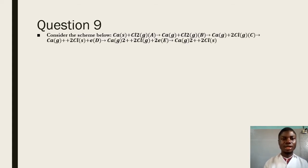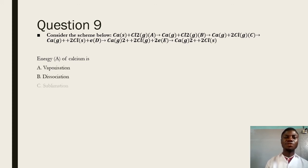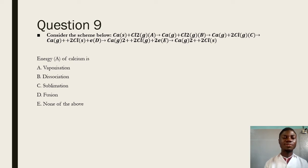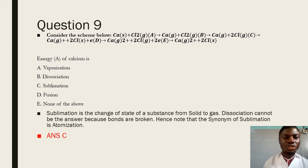Question 9 says: consider the scheme below. We have been given a series of equations and asked to identify energy A of calcium. From calcium solid to calcium gas involves a change of state from solid to gas, so the energy in this case is sublimation. Sometimes you will see atomization used instead — atomization is the same thing as sublimation. Therefore, the best answer is sublimation. Dissociation cannot be correct because dissociation deals with the breaking of a bond, which is why B is wrong. The answer is C.